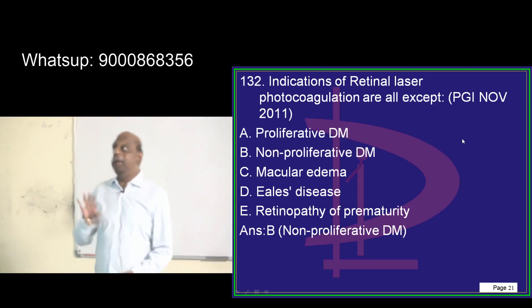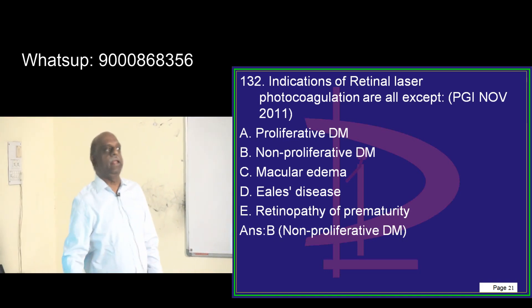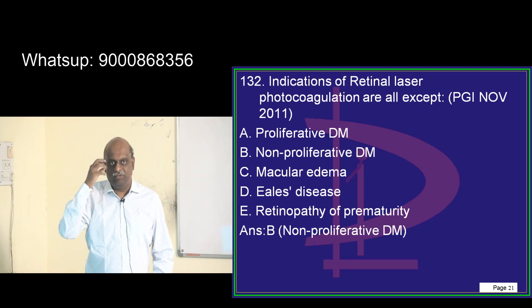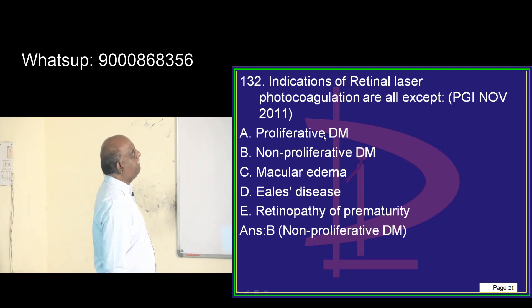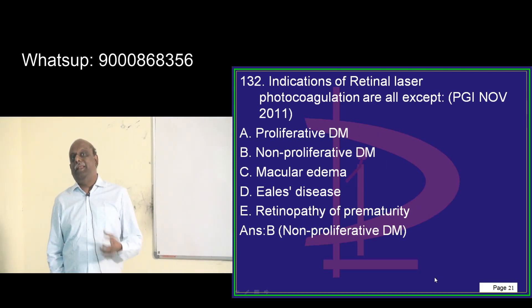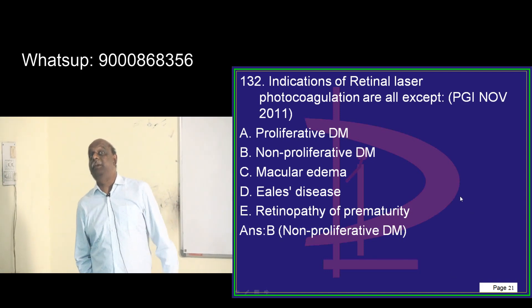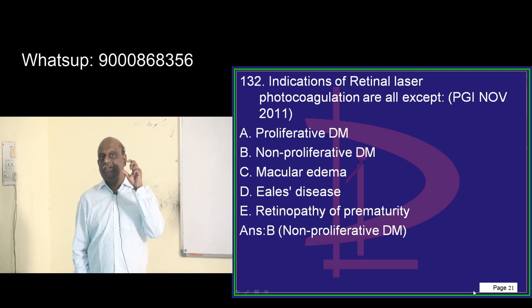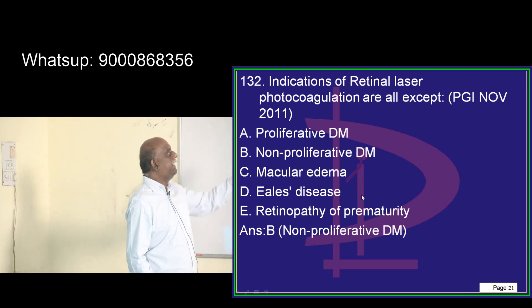Eales disease is a hypersensitivity reaction towards tuberculin protein that leads to development of a venulitis of the vessels in the eye, leading to development of vitreous hemorrhages in a young man who had a past history of TB. This hypersensitivity attacks the vessels — vasculitis leading to vitreous hemorrhage — that is Eales disease.